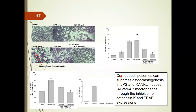In our previous study, we used liposomes to encapsulate curcumin to suppress osteoclastogenesis through the downregulation of cathepsin-K and TRAP expression.